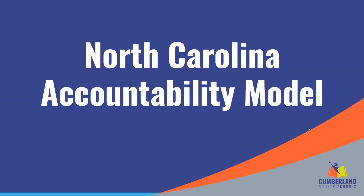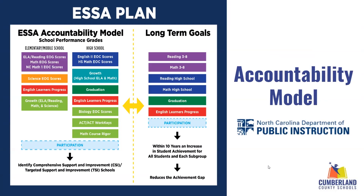I'd like to begin by briefly sharing a bit about the North Carolina Accountability Model. As required by North Carolina General Statute 115C-8315 and the North Carolina Every Student Succeeds Act, also known as ESSA, school performance grades are based on two overall components: growth and achievement. The indicators for elementary and middle schools differ from those at the high school level, as seen in the chart shown.